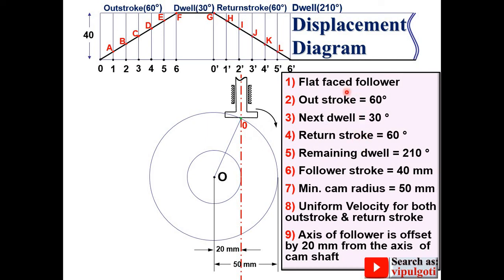Your angles must be opposite to this direction, means anticlockwise direction from this reference line. So 60 degrees, then 30 degrees, then 60 degrees, so automatically your remaining angle will be 210 degrees. Now divide this outstroke into six equal parts, so each division must be 10 degrees with the help of the protractor. Give the name as 0 dash, 1 dash, 2 dash up to 6 dash as you have given in the displacement diagram. Similarly divide the return stroke into six equal parts with the help of the protractor.